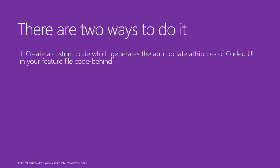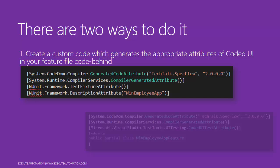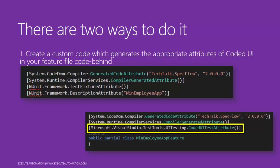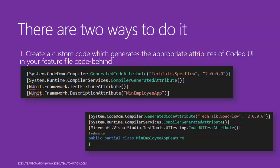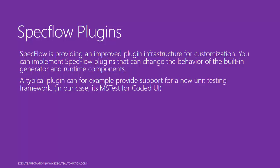So what should we do? There are two ways to handle this. The first is to create custom code that generates the appropriate Coded UI attributes in your feature file code-behind. Right now, if you generate code for Coded UI testing, the code-behind of the feature file will have an NUnit framework, a TestFixture attribute, and a Description attribute. But we also need the attribute Microsoft.VisualStudio.TestingTools.UITesting.CodedUITestAttribute on the class. The second option is to write a custom SpecFlow plugin for Coded UI. SpecFlow provides an improved plugin infrastructure for customization.